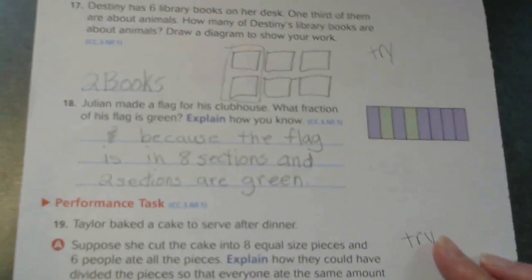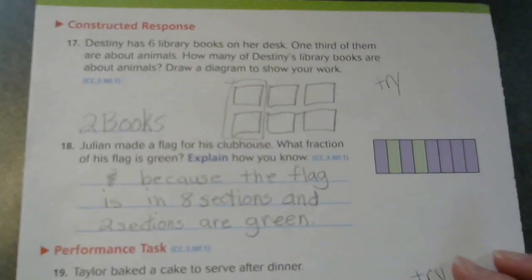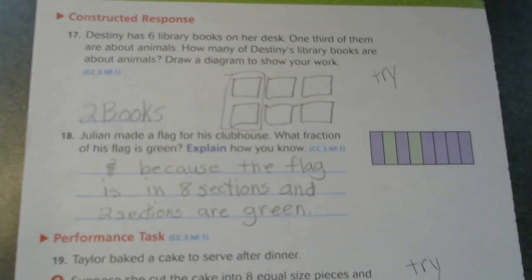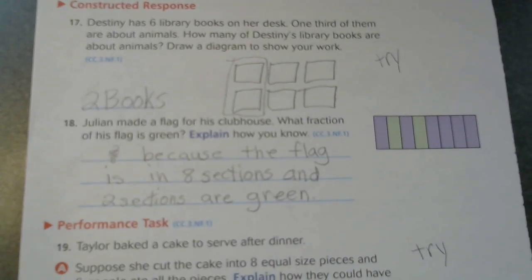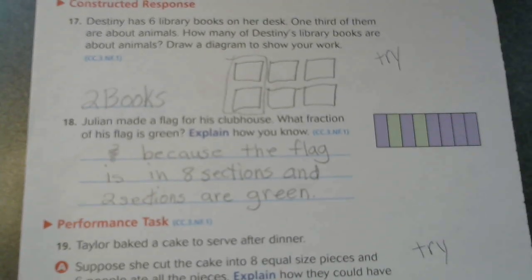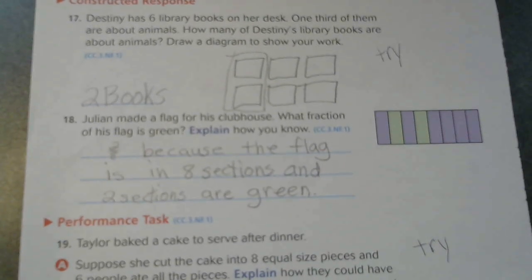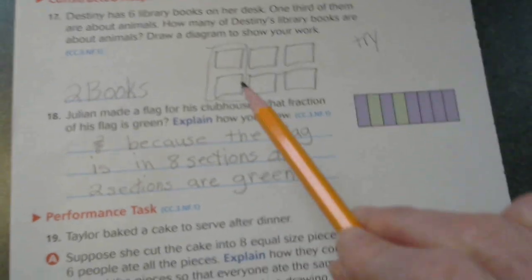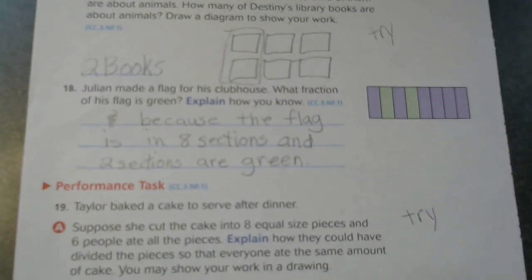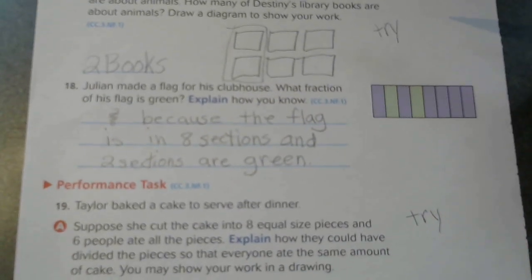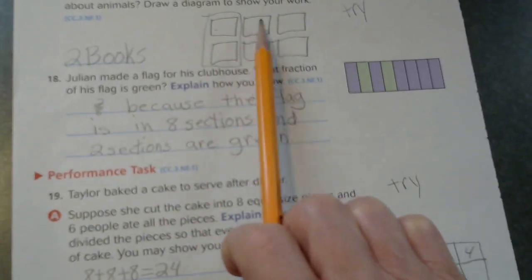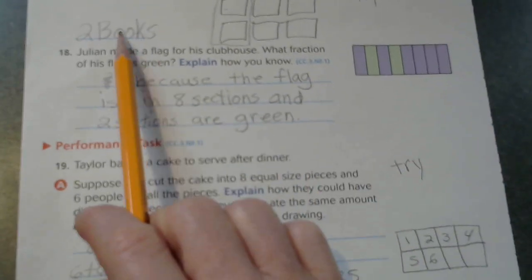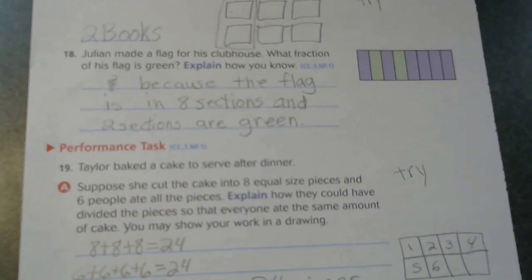All righty, we're going to just quickly go over the constructed responses. Destiny has six library books on her desk. One-third of them are about animals. How many of Destiny's library books are about animals? Draw a diagram to show. I drew my six books and it says one-third of them are about animals. One-third, two-thirds, three-thirds. So two books are about animals.